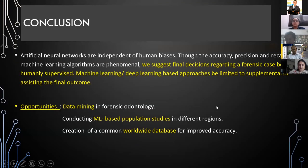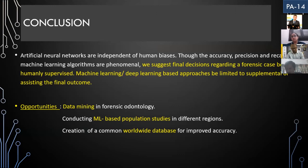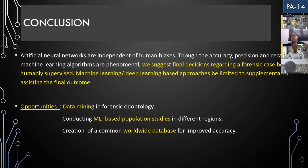To conclude, even though artificial neural networks are independent of human bias and have higher accuracy, precision, and recall, we suggest that final decisions regarding a forensic case be humanly supervised. Machine learning and deep learning approaches should be limited to supplementing or assisting the final outcome, with final validation being humanly supervised — much like how immunohistochemistry is used in oral pathology to supplement the findings of an oral pathologist.